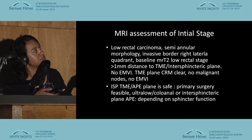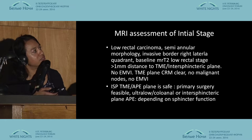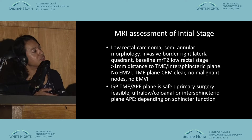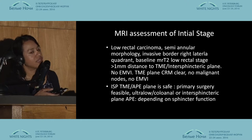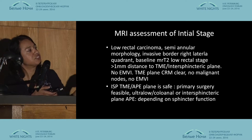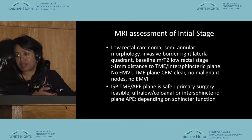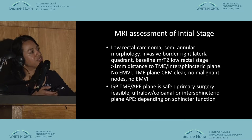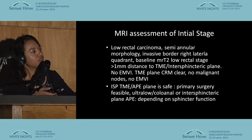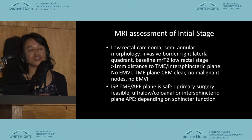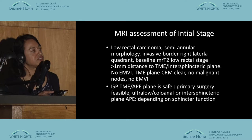On the baseline assessment: low rectal cancer, semi-annular morphology, invasive border in the right lateral quadrant, T2, more than a millimetre to the TME and intersphincteric plane, no EMVI, TME plane CRM is clear, no malignant nodes. In our MDT, we may be considering primary surgery — whether to do an ultra-low coloanal anastomosis, intersphincteric plane, or APE — and all of this depends on the patient's own wishes and sphincter function.